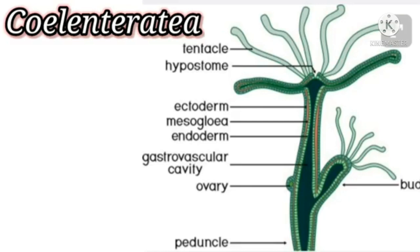Cnidaria are aquatic organisms — mostly marine and a few freshwater forms. They are multicellular, with many cells. They are radially symmetrical animals. If we cut through their central axis, we get two equal parts. They have a tissue grade of organization. In phylum Porifera, they have only cells and no tissues, but in phylum Cnidaria, they have tissues — that means cells are joined to form tissues. Tissue formation started here.